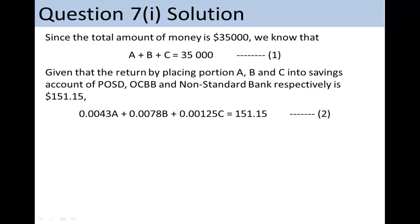Next, given that the return by placing portion A, B, and C into savings account of POSD, OCBB, and non-standard bank, respectively, is $151.15, we obtain the second equation.